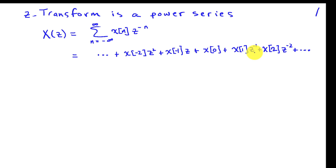So what you can see is that if we can write X of Z in this fashion as a power series, then all we have to do is pick off the coefficients for X of N from the corresponding power of Z.